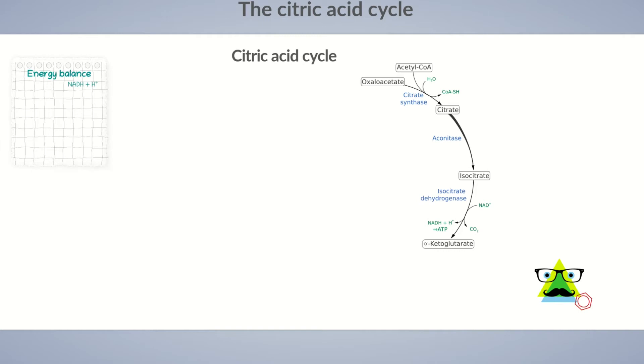The second carbon dioxide is immediately cleaved in the next step of the citric acid cycle. Alpha-ketoglutarate dehydrogenase transfers coenzyme A to the remaining succinyl group to form succinyl-CoA. The electrons and protons released during the reaction reduce NAD+ to NADH and H+. So we can add another reducing equivalent to the energy balance.